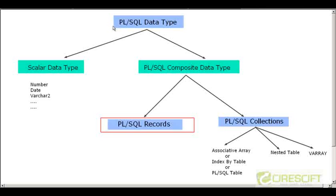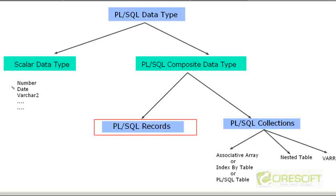Hello. Welcome back to PL/SQL tutorial. In this PL/SQL tutorial, we are going to discuss about PL/SQL composite data types. Here is an overall view of PL/SQL data types. We have scalar values, which are primitive data types like number, date, varchar, and all those things. Then we have another category where we combine these primitive data types together, and we call them PL/SQL composite data types. There are two types: one is PL/SQL records, and another one is PL/SQL collections. In this tutorial, we are going to discuss about PL/SQL records.